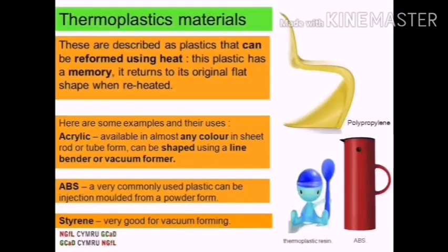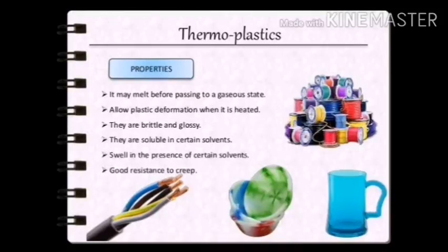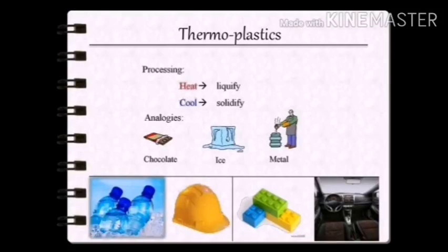Thermoplastics can be moulded into different shapes again and again by repeated heating and cooling. Properties of thermoplastics: they may melt before passing to a gaseous state; they allow plastic deformation when heated; they are brittle and glossy; soluble in certain solvents; they swell in the presence of certain solvents; and they have good resistance to creep. When heated, thermoplastics liquefy, and when cooled they solidify.